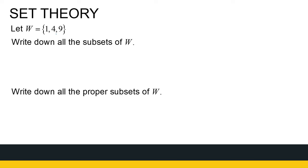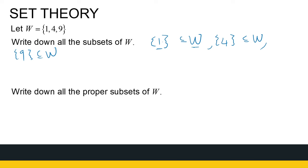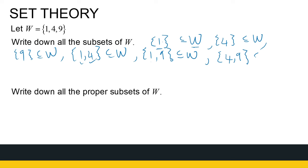If I've got the set W = {1, 4, 9} and I want to write down all the subsets of that set — something is a subset of W if every element of the first set is in the second set. So the set with just the element 1 is a subset of W. The set with 4 is also a subset of W. The set with 9 is also a subset of W. What about the set with 1 and 4? Yes, that's a subset because 1 is in W and 4 is in W. Then the set with 1 and 9, and the set with 4 and 9 are also subsets of W.